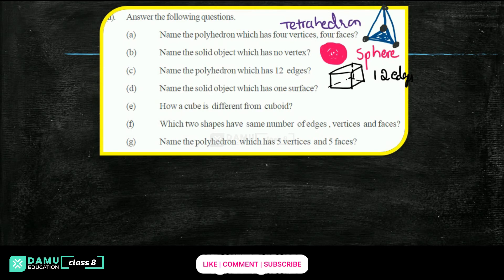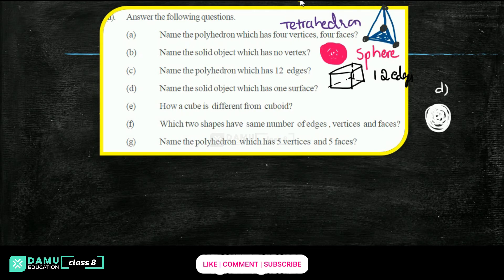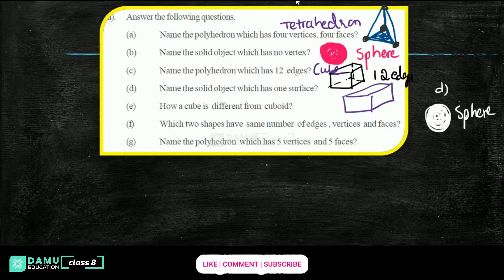Name the solid object which has one surface. Which has one surface — that is also only one surface — it will be like a sphere. I am writing D here: it will be a sphere, only one surface. There is no vertex for this, so it means sphere. For C, it will be 12 edges — it may be a cube or it may also be a cuboid. Cuboid also has 12 edges.